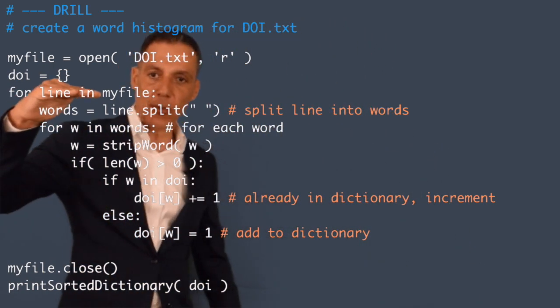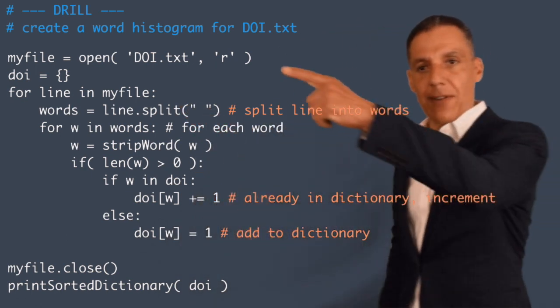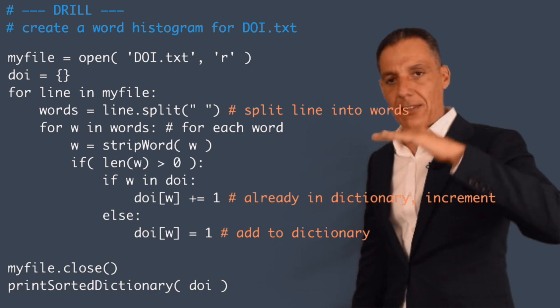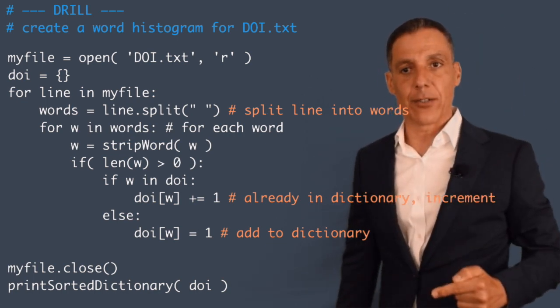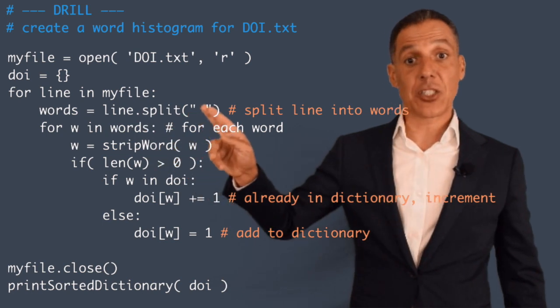So what I'm doing here is I'm grabbing a line of my file. So my file, of course, is the file descriptor that I just opened. So line will be the first line, the second line, the third line, separated by the carriage returns. I'm going to split that line on a space.